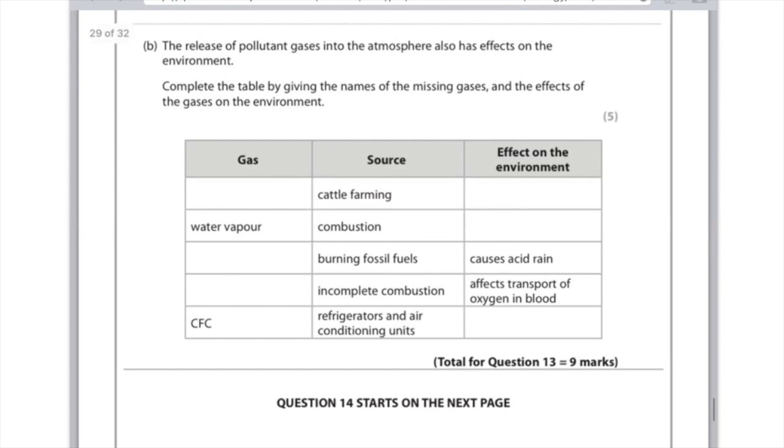The release of pollutant gases into the atmosphere also has effects on the environment. Complete the table by giving the names of missing gases and effects on the environment. Cattle farming: they fart and burp out methane. Write methane in the gas column, and this will lead to the greenhouse effect or global warming. Next, water vapor is produced by combustion, and that again will lead to the greenhouse effect because water vapor is a component of global warming.